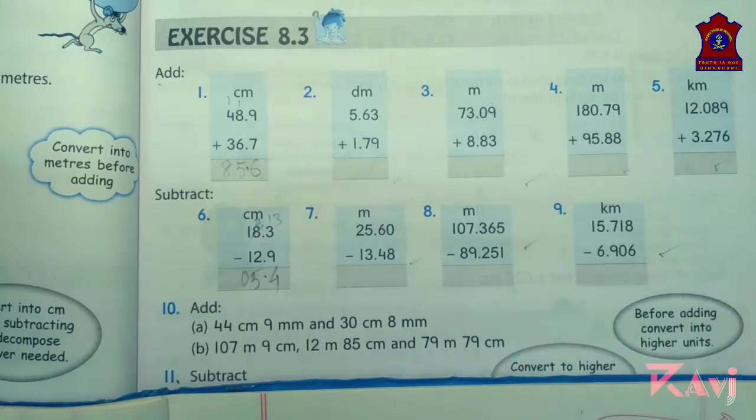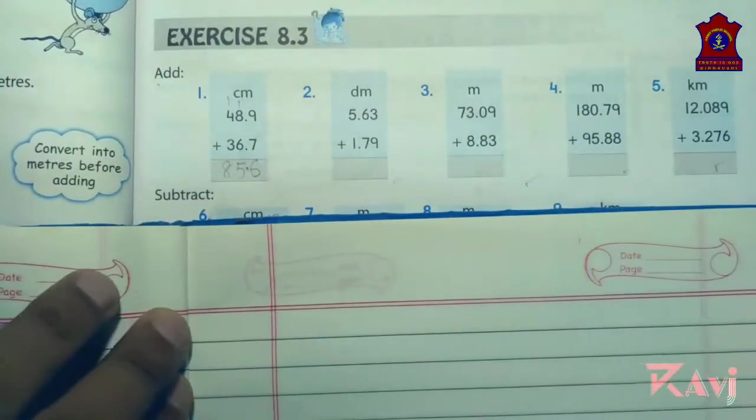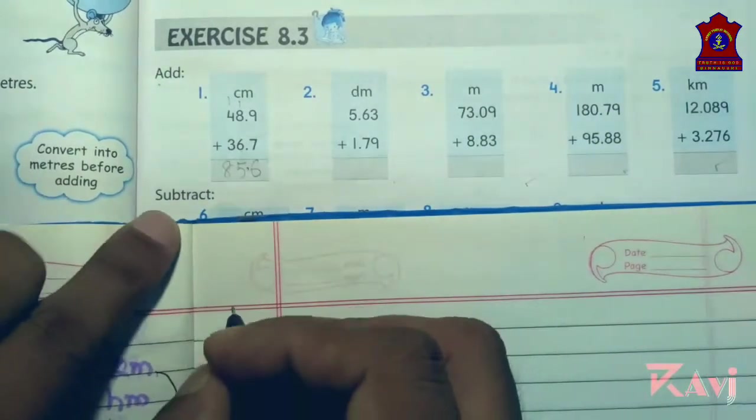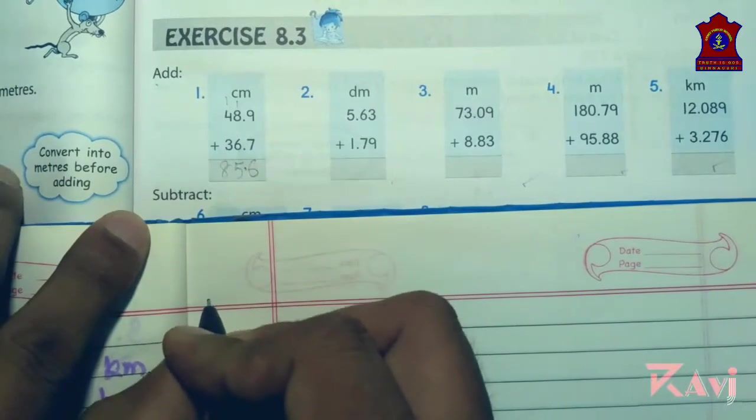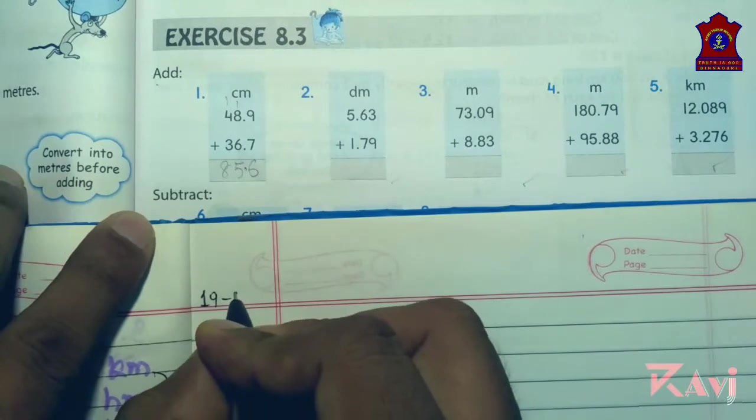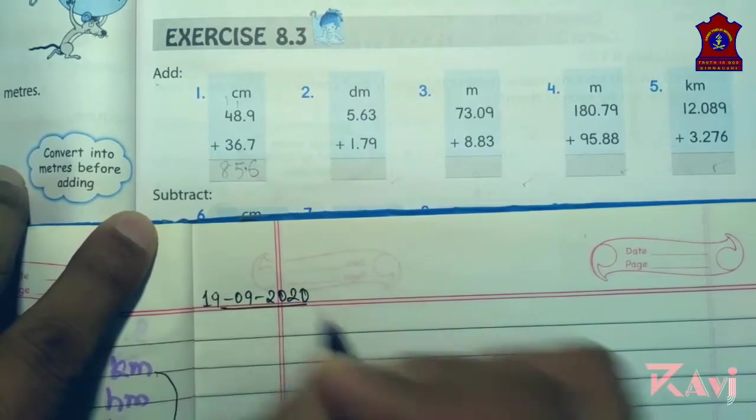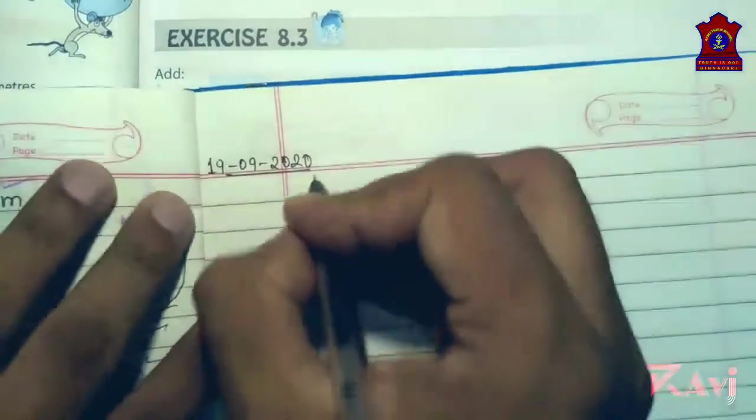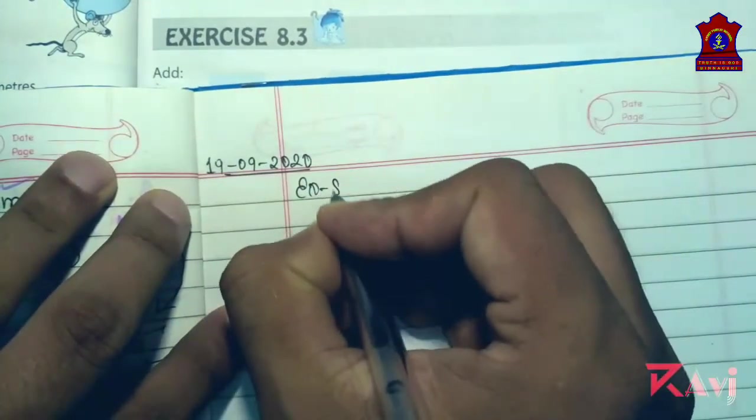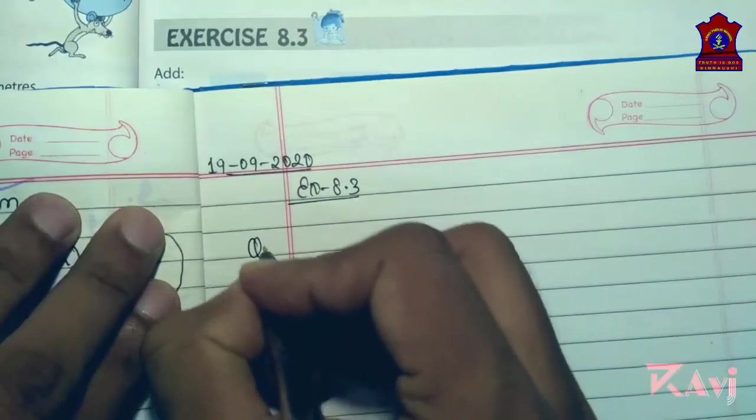So what is today's date? Today's date is 19/9/2020. Exercise 8.3 and we will be starting from question number 10.